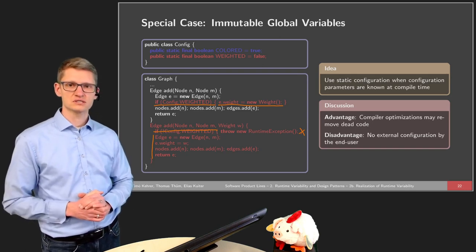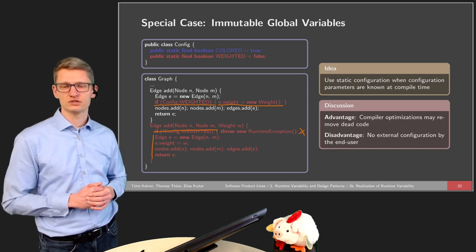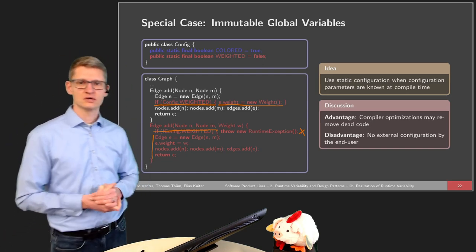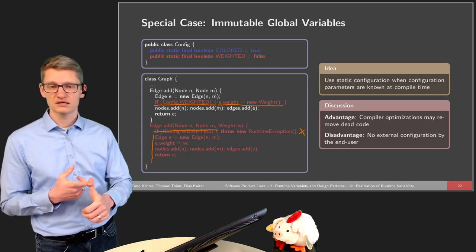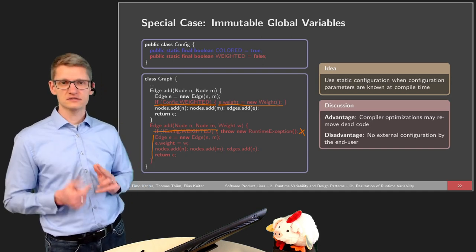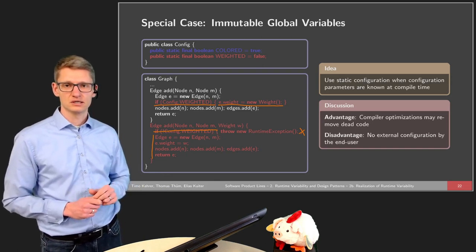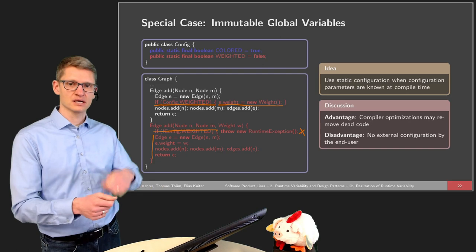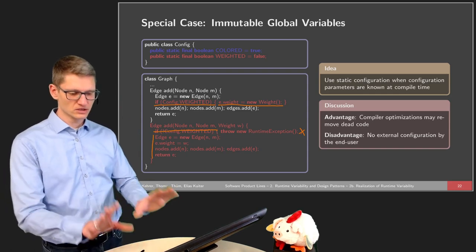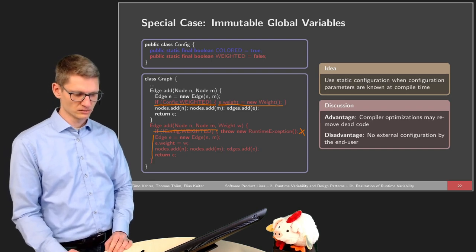The disadvantage of immutable global variables is that there is no possible external configuration by the end user. All three strategies we discussed — command-line parameters, preference dialogs, and configuration files — are not applicable if we have immutable global variables, because the selection is already chosen at compile time. In some sense, this is not a real technique for runtime variability; it could even be considered compile-time variability.